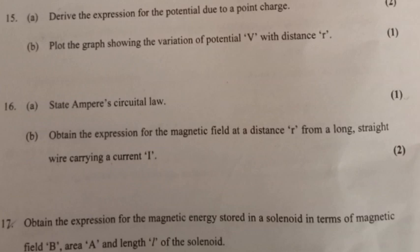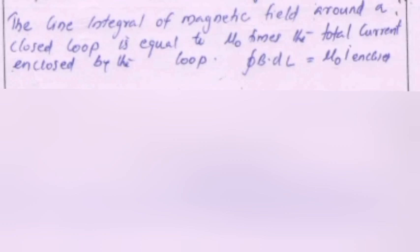Question 16A: State Ampere circuital law. Part B: Obtain the expression for the magnetic field at a distance R from a long straight wire carrying a current I. Answer A: The line integral of magnetic field around a closed loop is equal to μ₀ times the total current enclosed by the loop.